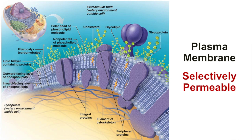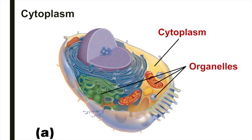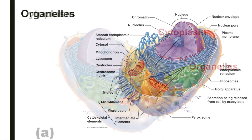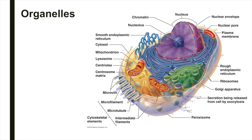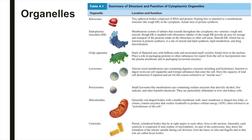The cytoplasm consists of the cell contents between the nucleus and plasma membrane. Suspended in the cytoplasm are many small structures called organelles. The organelles can be thought of as the small organs of the cell, specialized to carry out specific functions. Organelles include ribosomes, smooth and rough endoplasmic reticulum, Golgi apparatus, lysosomes, peroxisomes, mitochondria, cytoskeletal elements, and centrioles. Table 4.1 summarizes the structure and function of cell organelles.